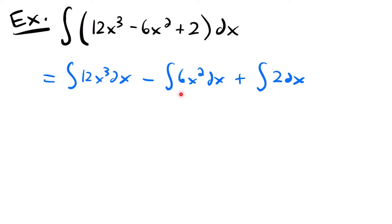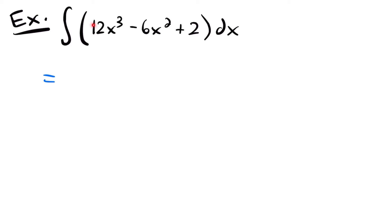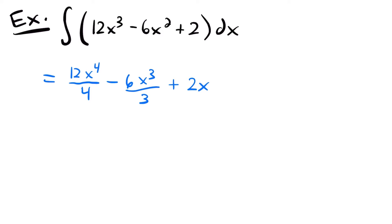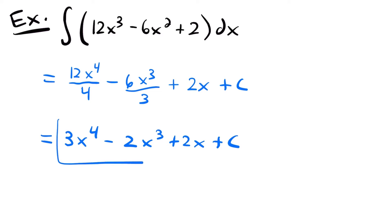That is one of our rules for integration. We can skip that step and move into taking the integral using our integration rules for each term. Starting with our first term, we'll add 1 to our exponent, so we'll have 12 times x to the fourth power, then divide by 4. Then we subtract 6 and take the integral of x squared — we add 1 to get x cubed divided by 3. The integral of a constant is just that constant times x, so we have 2x. Don't forget plus c. Simplifying: 12 divided by 4 is 3, giving us 3x to the fourth power minus 2x to the third power plus 2x plus c.